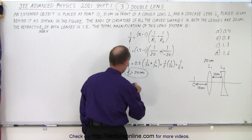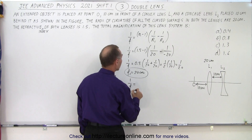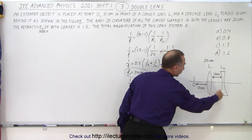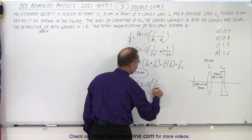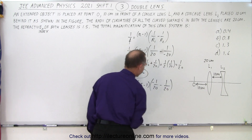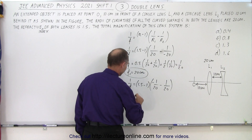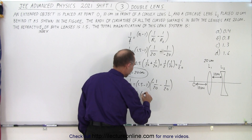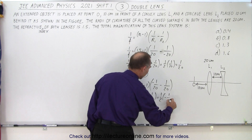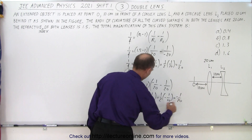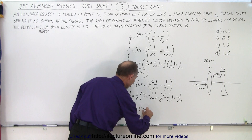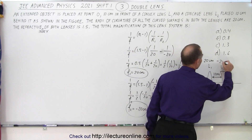For the second lens, 1 over f equals 1.5 minus 1, times — notice this surface bulges to the right so that's a negative value — minus 1 over 20, minus 1 over 20, since that surface bulges to the left (positive). We get 1 over f equals 0.5 times negative 1 over 10, which is negative 1 over 20. So f2, the second lens, has a focal length of minus 20 centimeters.